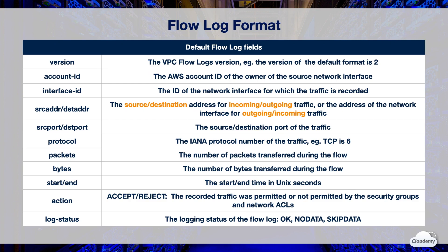Source port or destination port is the source or destination port of the traffic. Protocol is the IANA protocol number of the traffic — for example, the protocol number of TCP traffic is 6. The packets field is the number of packets transferred during the flow. The bytes field is the number of bytes transferred during the flow. The start or end field is the start time or end time in Unix seconds when the first or last packet of the flow was received within the aggregation interval.